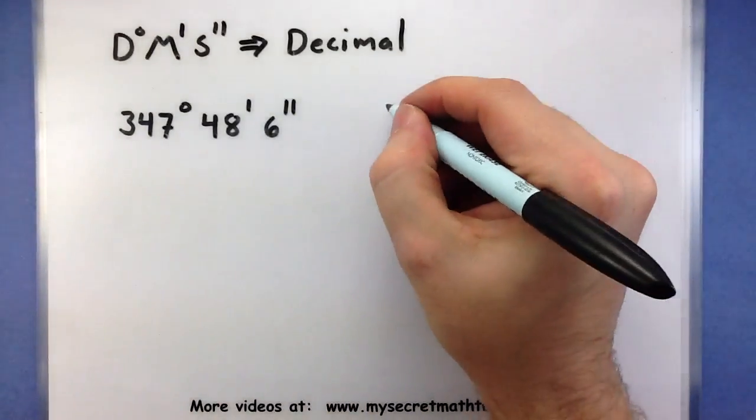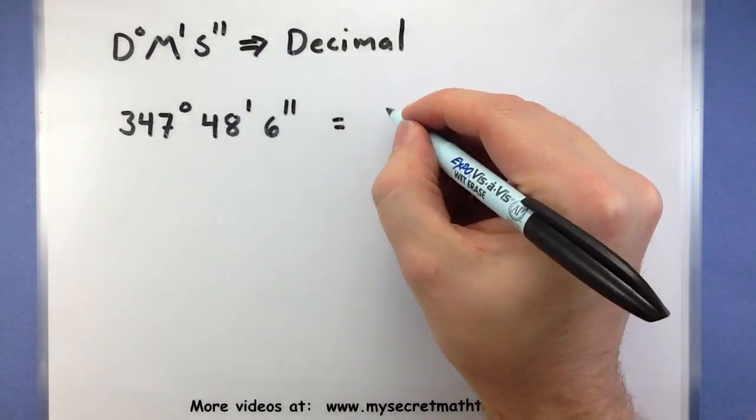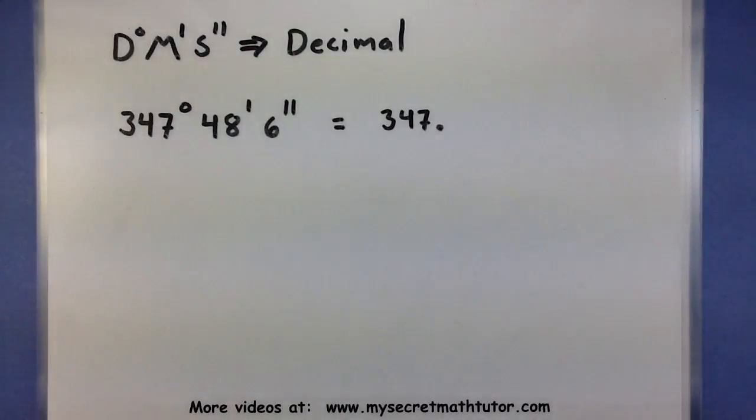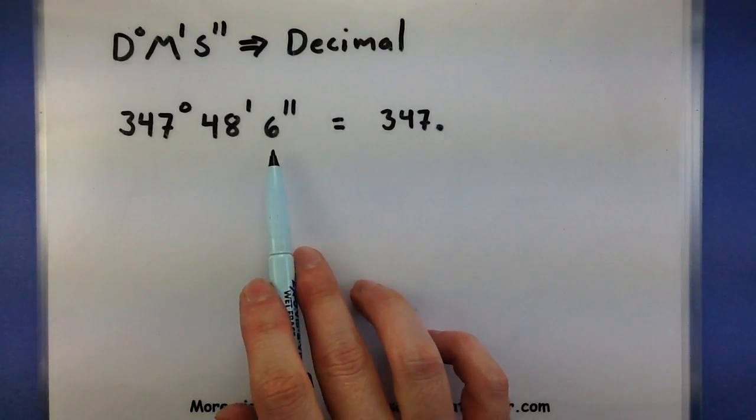The first thing I can do is take this number, 347, and it will be my new number in front of the decimal place, so 347 point. Now for the rest, I need to divide by 60 and by 3,600.